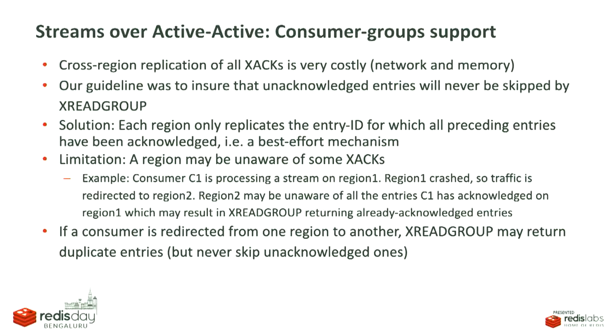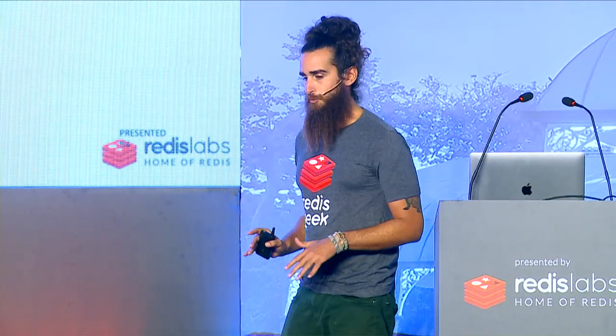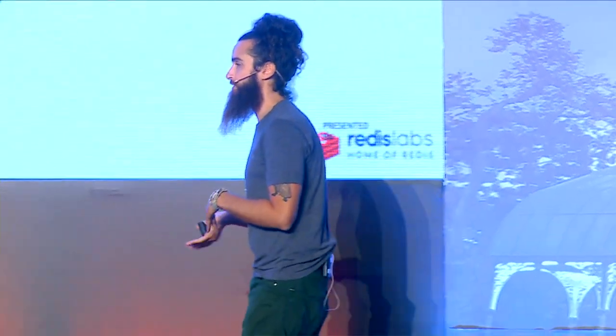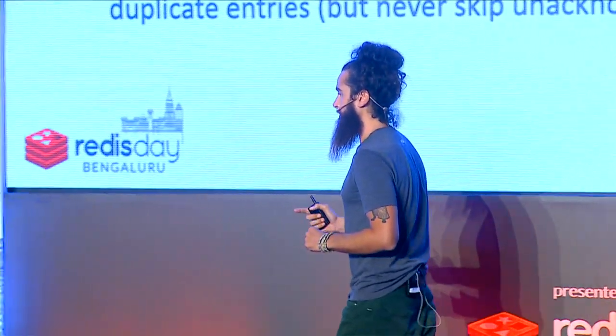For consumer groups, in order to keep all regions aligned, ideally we would like to replicate every XADD. But it's very costly in both network and memory to replicate each and every XADD. Our guideline was that unlike XREAD, we didn't want XREADGROUP to miss any unacknowledged entry. The solution was that every region replicates the entry ID for which all preceding entries have been acknowledged. It's a best-effort mechanism with a limitation: in case of network redirection, a consumer moving from region 1 to region 2 may get already-acknowledged entries when issuing XREADGROUP. But it will never skip unacknowledged entries.